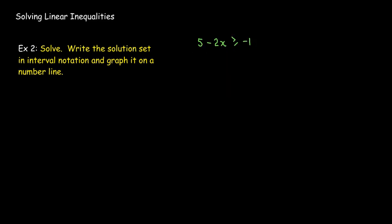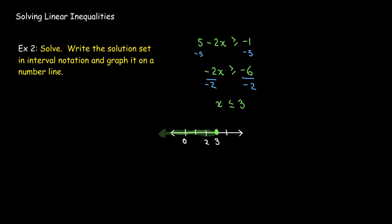In our second example, we have a negative 2x term. Subtracting 5 from both sides leaves negative 2x greater than or equal to negative 6. To get x by itself, we divide by negative 2, which reverses the inequality — it now points to the left, meaning less than or equal to. So x is less than or equal to 3. We can show that interval on the number line, and since we have the 'equals to' part, it's a solid dot going off to the left.